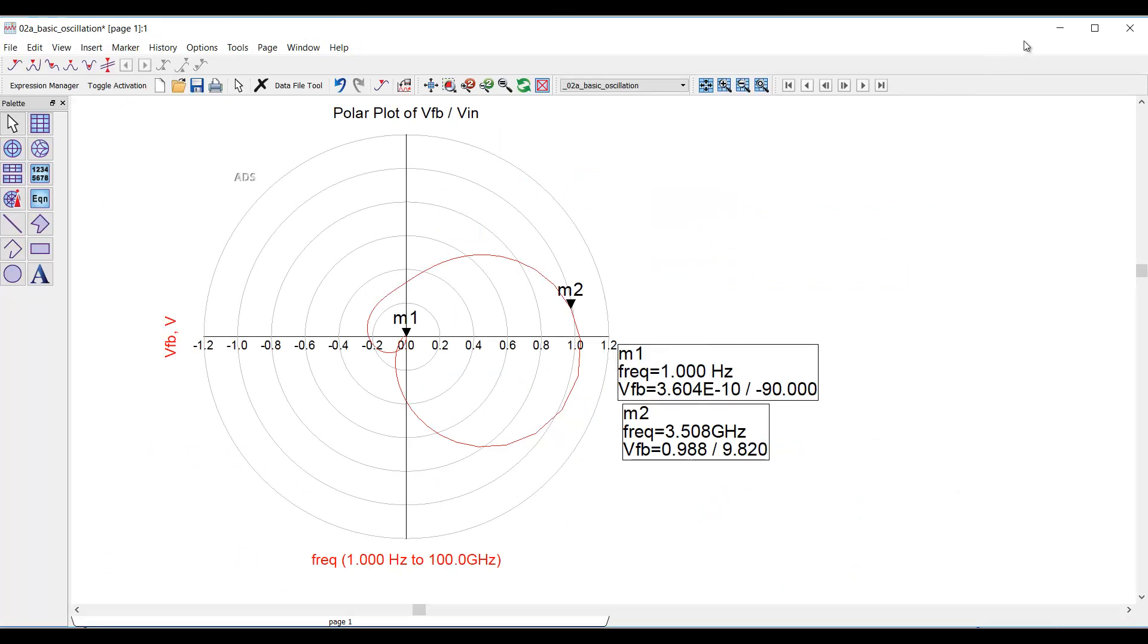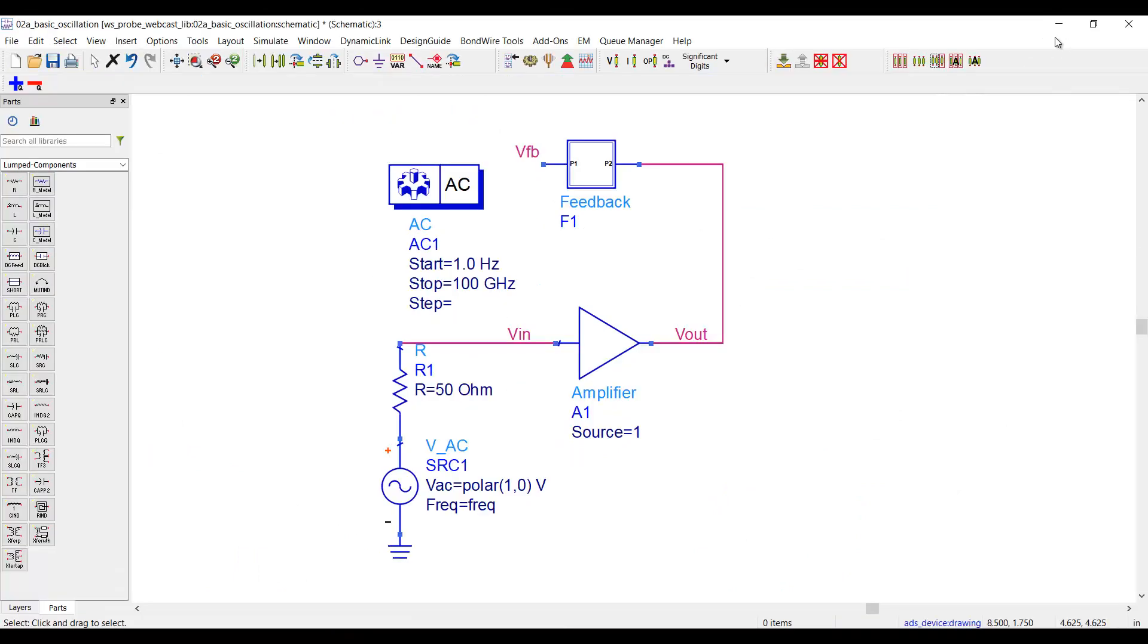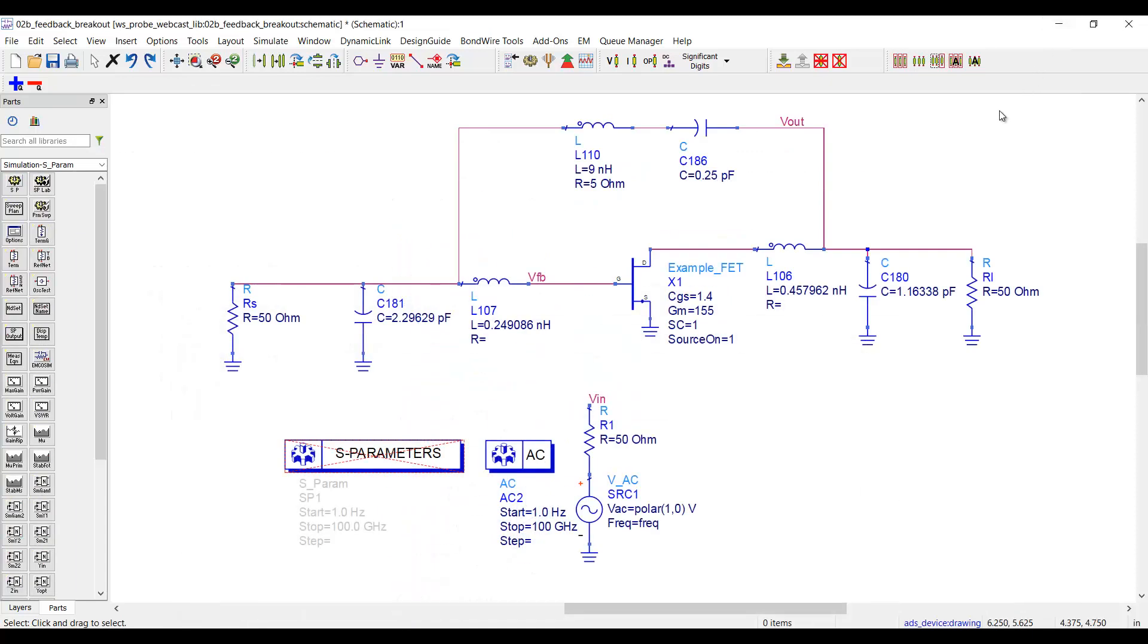Now, first, I want to return to that example and describe what was inside of those amplifier and feedback blocks. Here's a more detailed schematic, and you can see it's just a simple transistor amplifier circuit. And this feedback resistor can be adjusted to stabilize or destabilize the circuit, which is kind of nice.